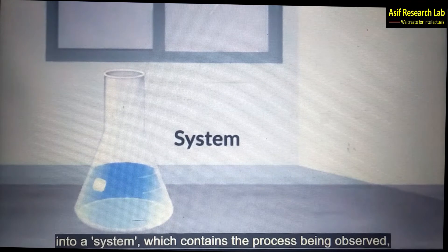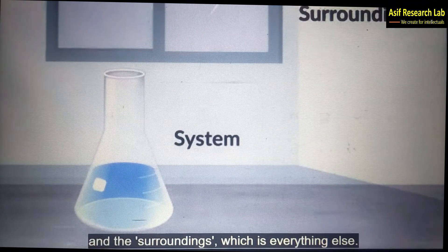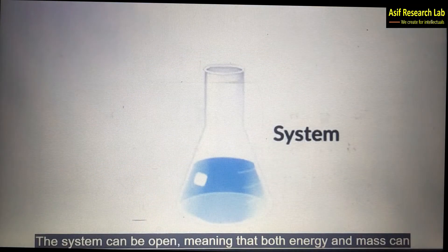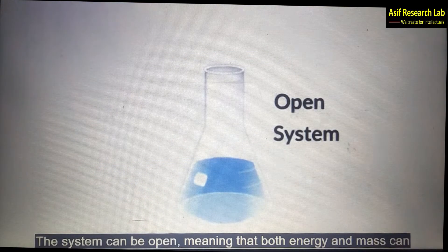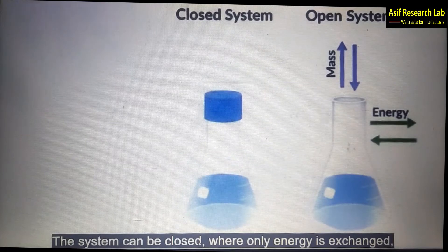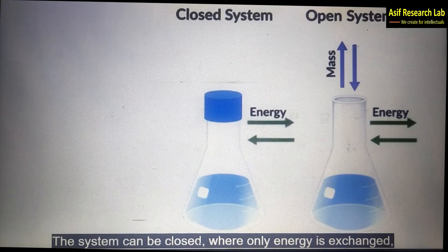The system contains the process being observed and the surrounding which is everything else. The system can be open meaning that both energy and mass can be exchanged between the system and surrounding. The system can be closed where only energy is exchanged.